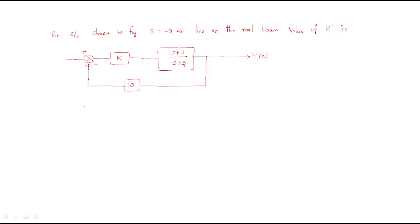Hello everyone. In this session we will discuss some more problems regarding root locus. The first problem is: for the system shown in the figure, s equals minus 2.75 lies on the root locus. Find the value of K.